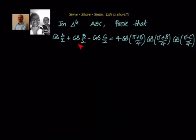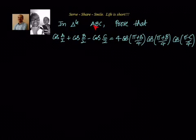As usual, we will start with the LHS and try to arrive at the RHS. For that, we will apply a sum-to-product transformation on the first two terms, then use the condition that in triangle ABC all angles add up to 180 degrees. We do appropriate transformations and try to arrive at the RHS.